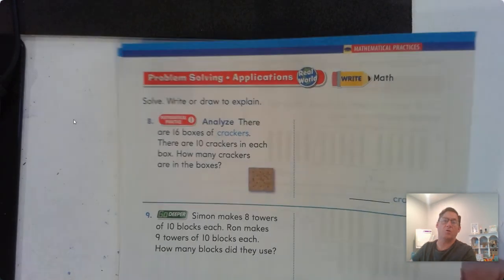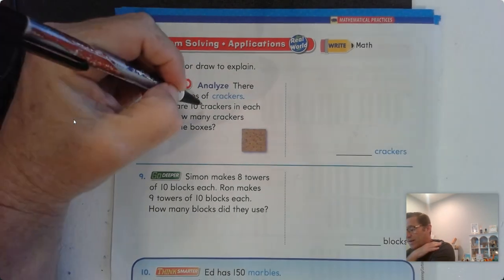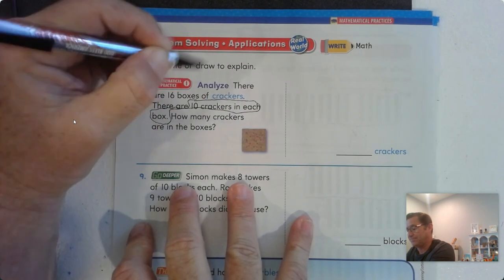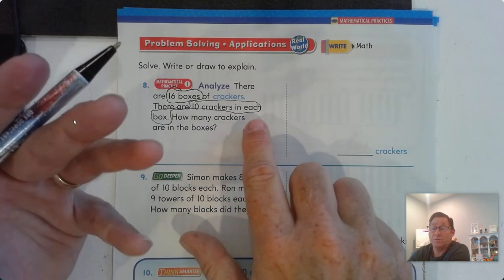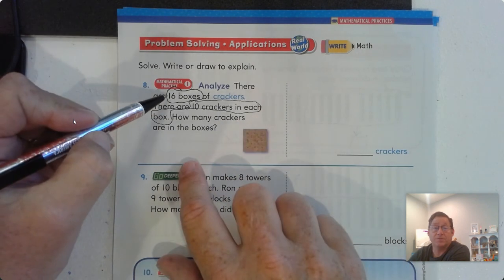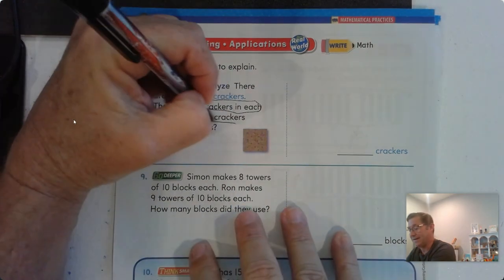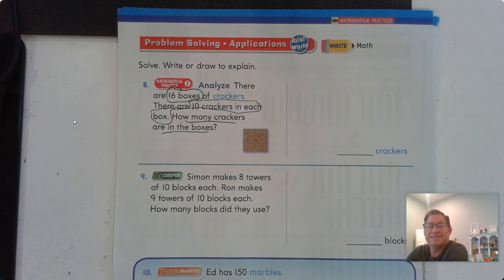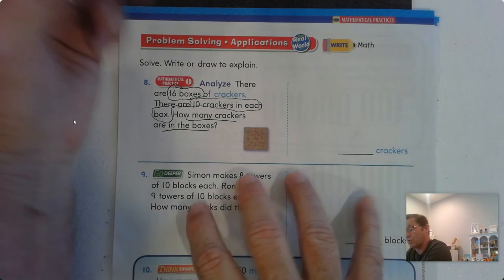All right, page sixty-four. Solve, write, or draw to explain. There are sixteen boxes of crackers, and there are ten crackers in each box. In third grade, we learn that 'in each' means we can multiply — so we could say sixteen times ten, which I know is one hundred and sixty. But how can I show that by drawing a picture? We have sixteen boxes with ten crackers in each box — that's the same thing as thirty bundles of ten straws, the very first problem we looked at. So, let's draw our sixteen boxes.